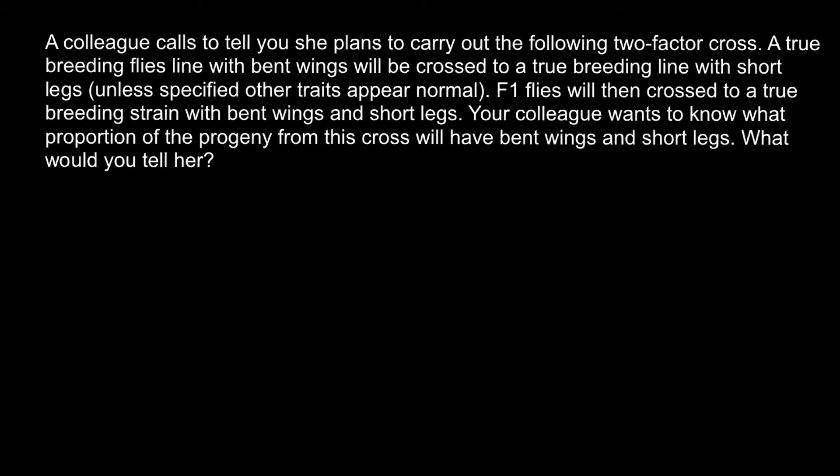Hello and welcome to Nikolai's genetics lessons. Today's problem: a colleague calls to tell you she plans to carry out a two-factor cross. A true breeding fly line with bent wings will be crossed to a true breeding line with short legs. Unless specified, other traits appear normal. F1 flies will then be crossed to a true breeding strain with bent wings and short legs. Your colleague wants to know what proportion of the progeny will have bent wings and short legs. I recommend you pause the video and try to solve this on your own first.